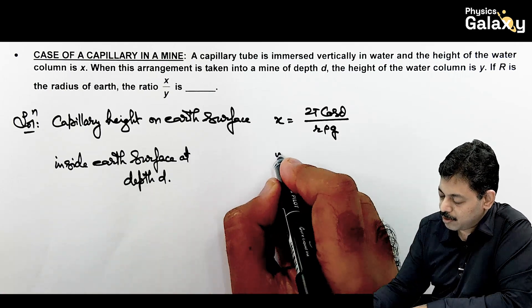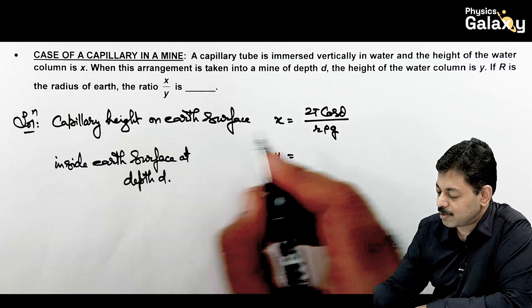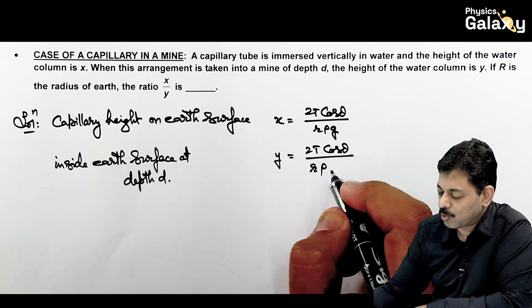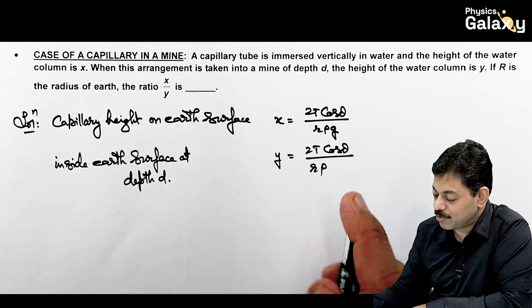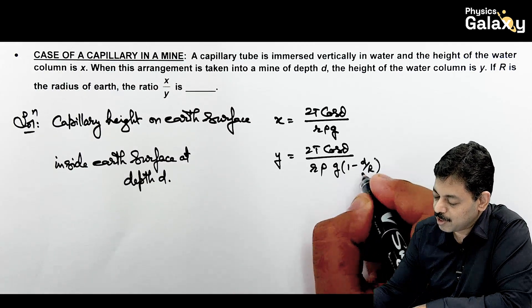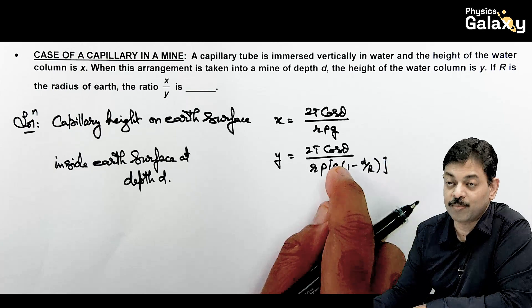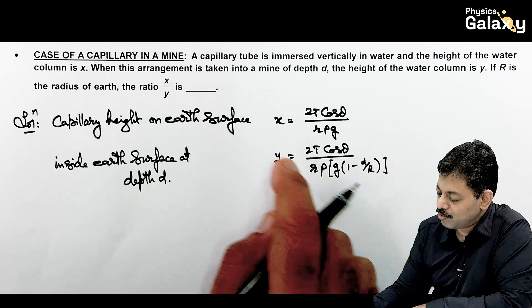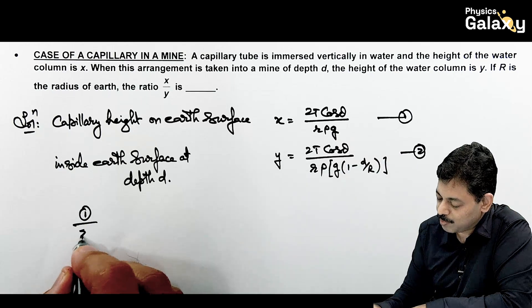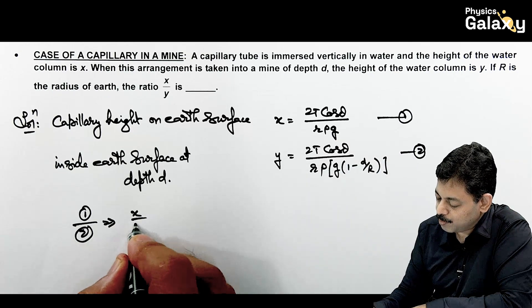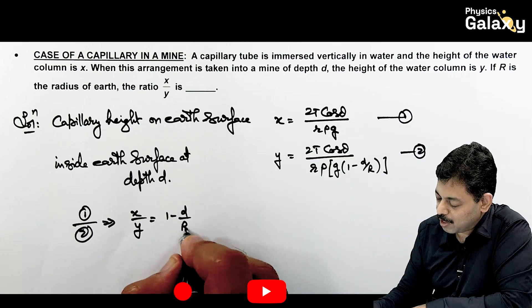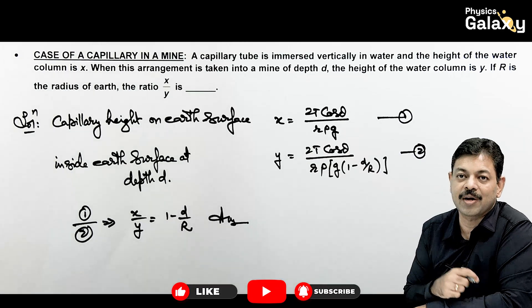When we go inside a depth, at depth d, then this capillary height y can be written as same expression 2T cos theta divided by r rho, but here the value of g will be changed. That will be changed to g multiplied by 1 minus d by R. This is the expression we use for the value of g at a depth of d inside the Earth surface. So x upon y, we can simply divide the two expressions. This gives x upon y equals to 1 minus d by R, as all the parameters get cancelled out. So that is the result we are directly getting.